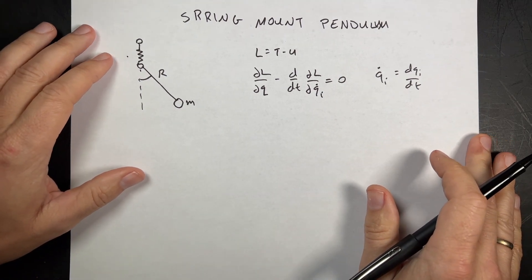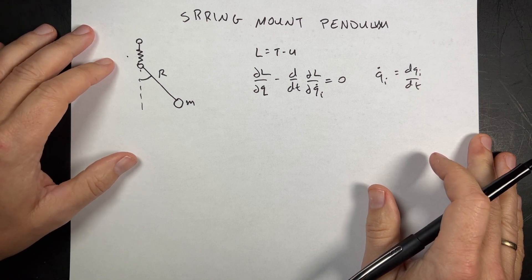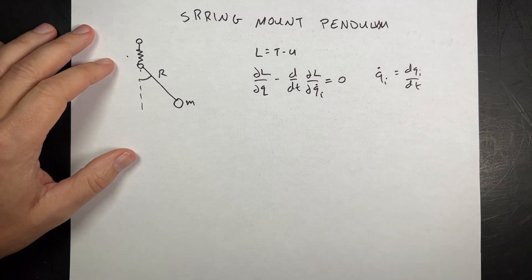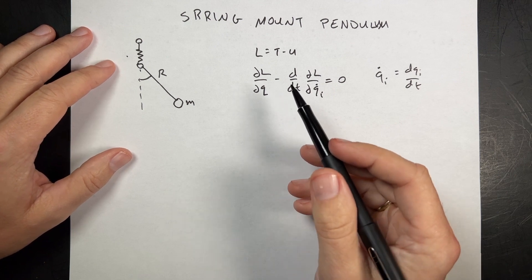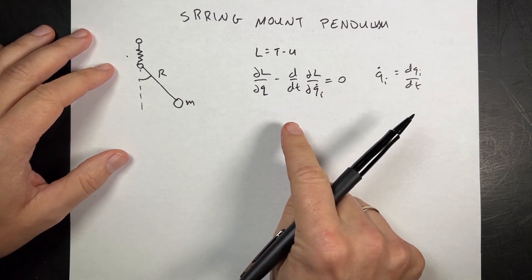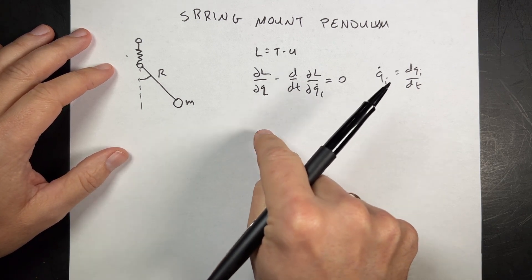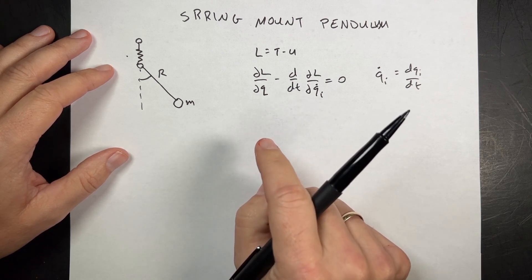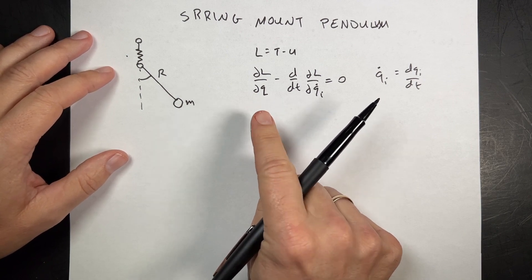I'm going to continue my series of obsessive calculations and modeling of Lagrangian systems. I have one here that I wanted to try and I'm calling it the Spring Mount Pendulum. I'm going to describe the system and then jump right into it. I'm going to do the calculations, do some of the symbolic work with SymPy Python, then model this in GlowScript and check the energy this time.